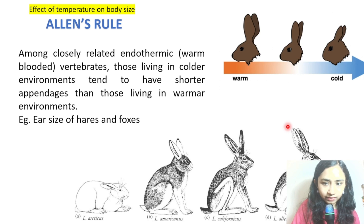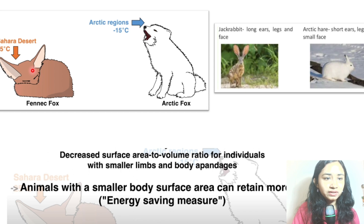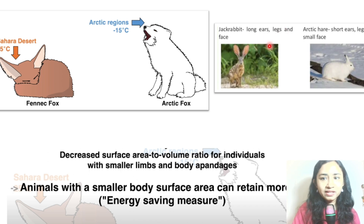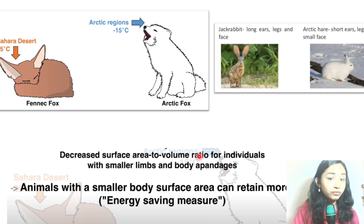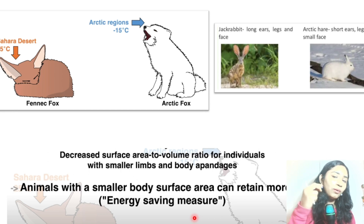Here you can see the fennec fox from the Sahara desert with larger ears, giving a larger surface area to volume ratio to lose heat easily. The arctic fox, by contrast, has very small ears and limbs — small protrusions — to reduce heat loss from the body. Similarly, the jackrabbit has long ears, while the arctic hare has short ears and a small face. Animals with smaller body appendages can retain more heat — this is also an energy saving measure in cold climates.